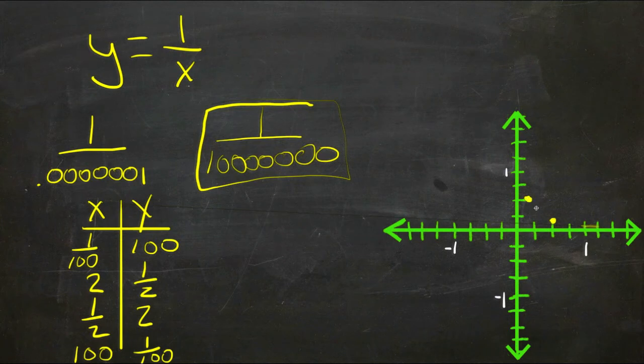If x is a hundred, y is one one-hundredth, so it's going to be clear down here, way off in that direction but almost on the x-axis. And then if x is one one-hundredth or almost zero, y will be a hundred, so it's going to be way up there but almost on the y-axis. You can see we're kind of forming a curve here that comes down and follows in between these two lines, then heads off in the other direction.